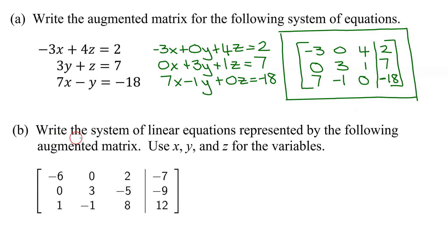In part B, we need to write the system of linear equations represented by this augmented matrix here, and we need to use X, Y, and Z for the variables. So the first column are going to be my X's, the next one are Y's, the next one are Z's, the augmented bar is equal, and these are the constants on the other side of the equals.